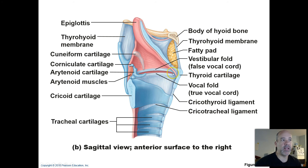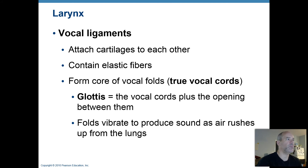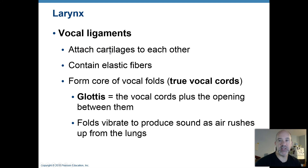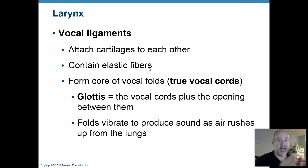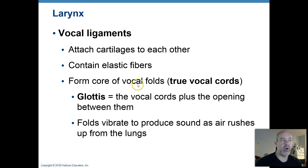Up here at the very top of the larynx, this is where you have your vocal folds, also known as your true vocal cords. Your vocal ligaments attach some of the cartilages to each other at the top of the larynx. They have lots of elastic fibers, which means they have a lot of elasticity — if they get stretched, they rebound into place very quickly. These vocal ligaments form the core of what are called your vocal folds or true vocal cords.